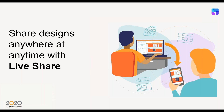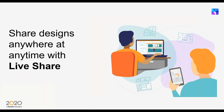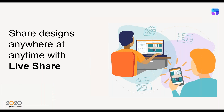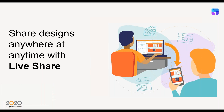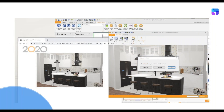Technology isn't always our friend, but sometimes it works in our favor — like our Live Share feature. How great would it be to show your customer your vision of their space so they can sign off on the design, or even just share it with them to allow them to make changes without leaving the comfort of their own home? You start by opening your rendering module and going to the Live Share option, where you enter the customer's information and their email.